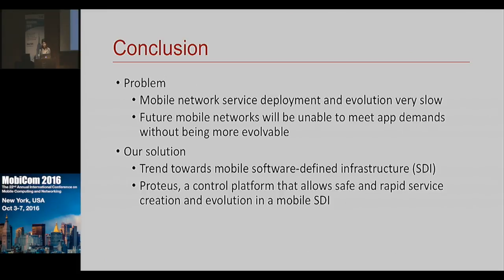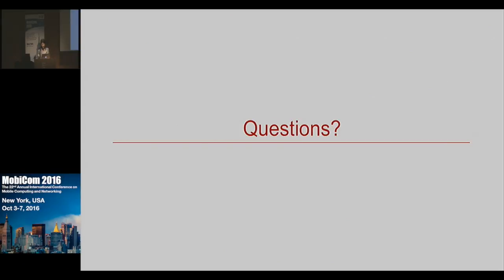In conclusion, we focused on the problem of mobile network service deployment and evolution being very slow, and that in order to meet the demands of anticipated future services, we need better service abstractions and support for evolution. Our solution leverages the trend toward soft technologies and a mobile SDI, creating Proteus — a control platform for safe and rapid service evolution. We have a profile available on the PhantomNet Mobility Testbed website where you can experiment with it.